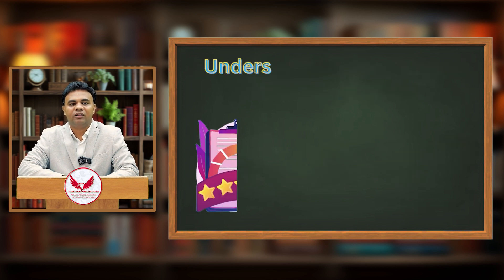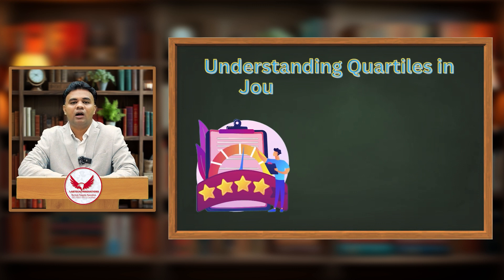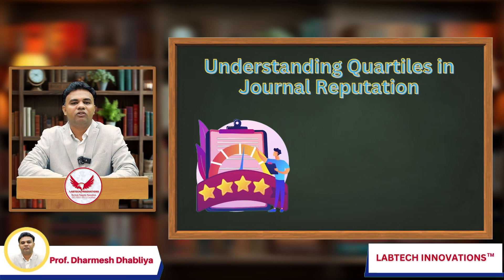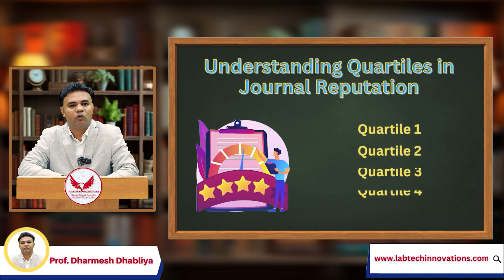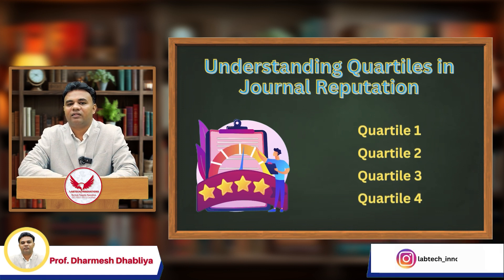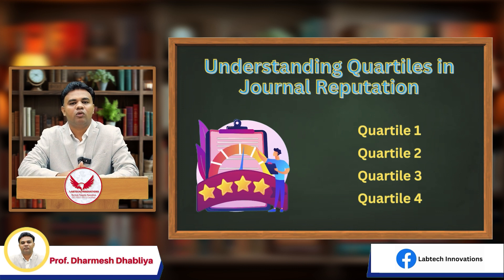In the next section, we need to understand how you can classify which journal has a higher reputation and which has a lower reputation. It can be done using quartiles — journals are divided into four quartiles: Q1, Q2, Q3, and Q4. You need to understand how these quartiles are assigned, on which subject areas a journal is higher ranked, and on which subject areas it is lower ranked. This requires a thorough study and cannot be done through a casual approach.